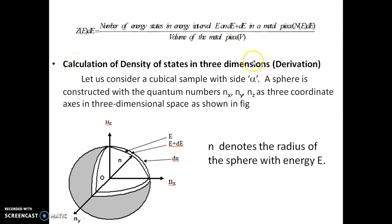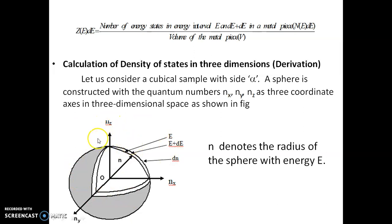Now we are going to derive the expression for density of energy states in three dimensions. To derive the expression, we consider a cubical unit cell of side A. Inside this cubic sample, we draw a sphere. The inner radius of the sphere is N with corresponding energy E, and the outer radius is N plus dN with corresponding energy E plus dE.